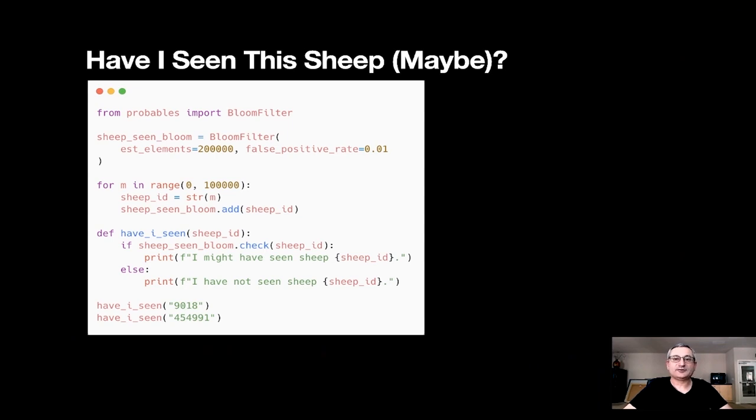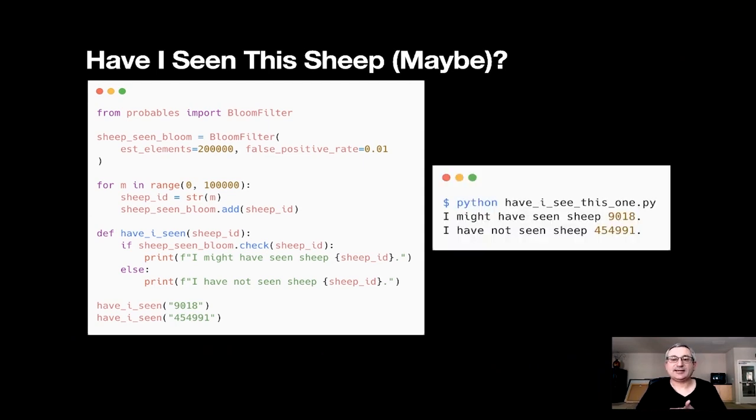Here's some Python code that uses this. We're going to use some library code for a Bloom filter using pybloom. We just set up a Bloom filter so we can configure it. This will work out how many hashes and the bit array size. We're saying we want to store 200,000 items. And we can dial in a false positive rate that's acceptable to us. And then that will figure out the memory size used. And that's part of our tradeoffs. The more accurate we get, the more memory, the less accurate, the less memory. Then we basically just add 100,000 sheep to the Bloom filter in much the same way as we did with the set. And have I seen function is pretty much the same. Again, we have a check function that says, have I seen the sheep? And it will say, I might have seen it because we can't be 100% sure. Or no, I definitely haven't. This is a good drop in for a set. The interface is very similar, but we're saving a lot of memory. And when we run this, you get the answers that we kind of expect. It might have seen 9018 and it hasn't seen 454901.